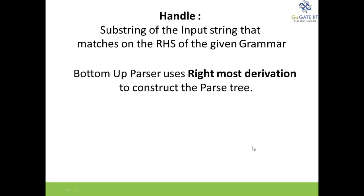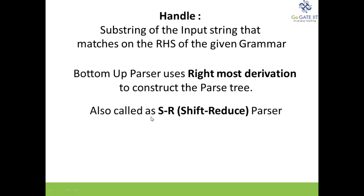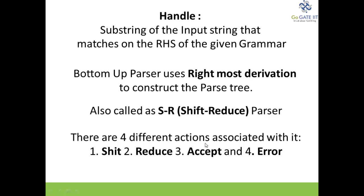In the bottom-up parser, it basically uses the rightmost derivation to construct the parse tree. The rightmost derivation means that with every reduce action, the rightmost non-terminal symbol is always used. This bottom-up parser is also called a shift-reduce parser.